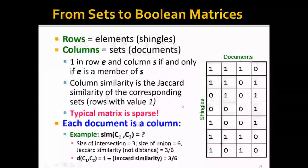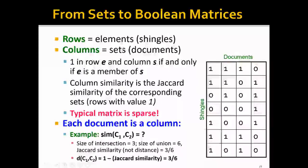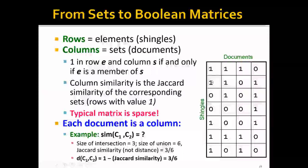Now let's go to the actual documents. To represent documents, we can use rows to represent the elements or shingles, and we can use columns to represent sets or documents. For example, let's look at this input matrix, where we have each column to represent a set of shingles. This is column 1 representing document 1, and this is column 2 for document 2. And we can see that this document 1 has 5 shingles, this document 2 has 4 shingles. And typically, these matrices will be very sparse, and each document is a column.